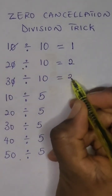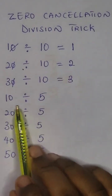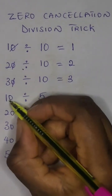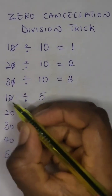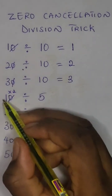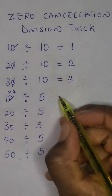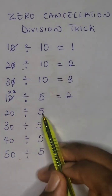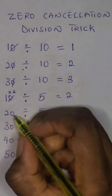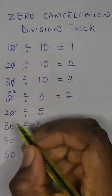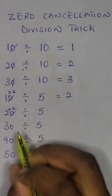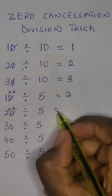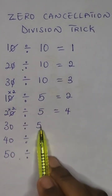10 divided by 5 — cancel out the zero, times 2: 1 times 2 equals 2. 20 divided by 5 — cancel out the zero, times 2: 2 times 2 is equal to 4. 30 divided by 5 — cancel out the zero, times 2: we have 3 times 2 equal to 6.